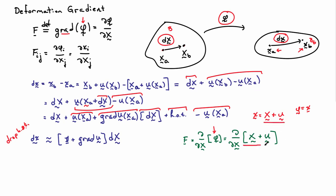The gradient of X with respect to X is just identity. So what I'm left with is F is equal to the identity plus the derivative of U with respect to big X. So I can identify then what's in the square brackets here as F.